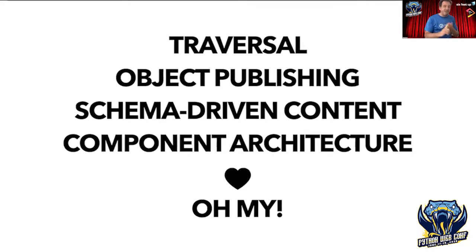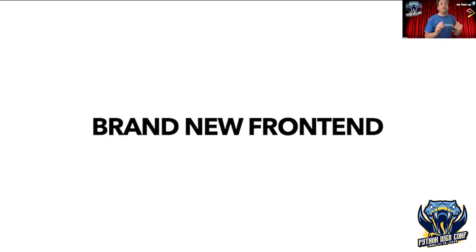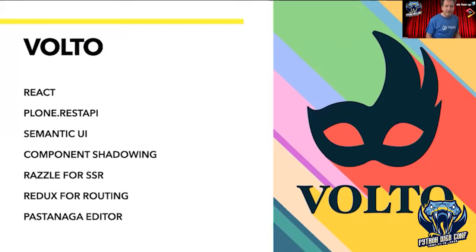For the backend people, it has traversal object publishing, schema-driven content, and a component architecture that is excellent. But now I'm talking about something completely different because Plone 6, same as Plone 5, has a REST API. On top of this REST API lives a brand new frontend. It uses React, semantic UI to render, component shadowing to override certain things, Razzle for server-side rendering, Redux for routing, and it has its own editor — the Pastanaga editor.